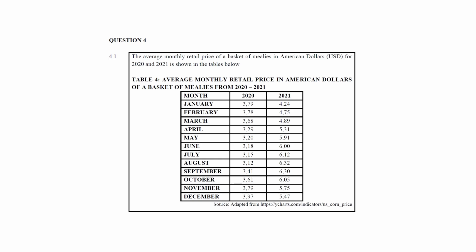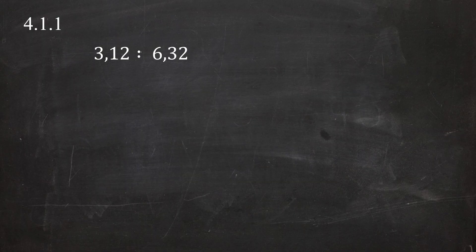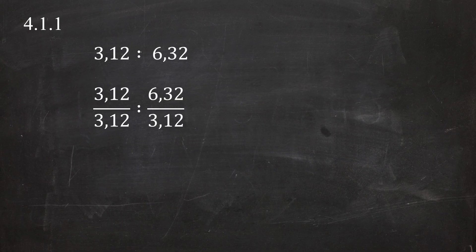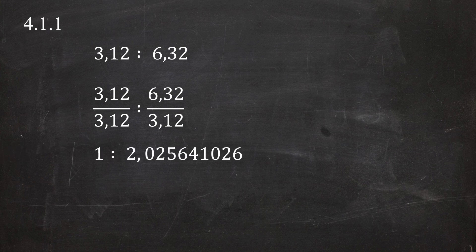A unit ratio is a ratio that starts with one and ends in a conversion factor of any number. From the table, the price of mealies in August 2020 is $3.12 and the price in August 2021 is $6.32. As a ratio this is written as 3.12 to 6.32. Dividing both sides by 3.12 gives a unit ratio of 1 to 2.0256410256.